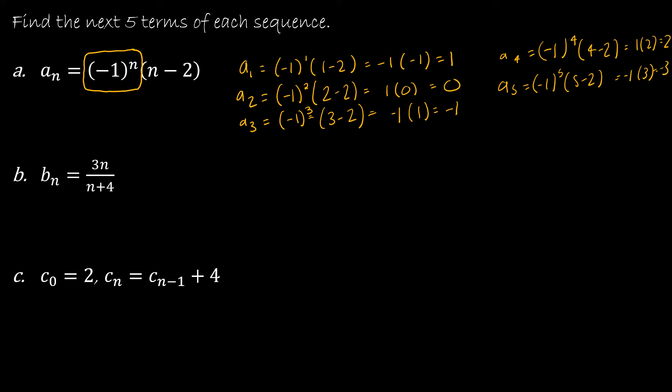So we didn't really see that oscillating happen until we got here: negative, positive, negative — but that's what that negative 1 to the nth power is going to do for us each time.